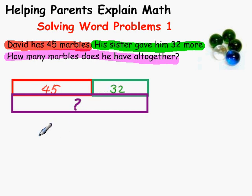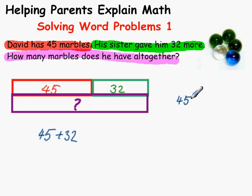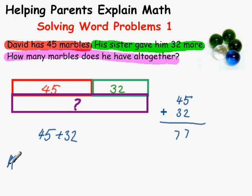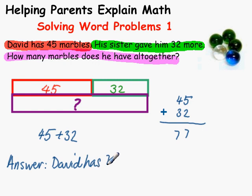So we write 45 plus 32. It's kind of hard to add horizontally, so we do it over here: 45 and 32. 5 and 2 is 7, 4 and 3 is 7. And our answer is: David has 77 marbles, all together.